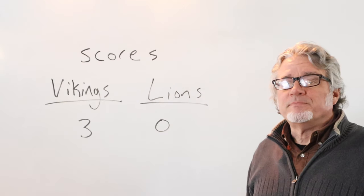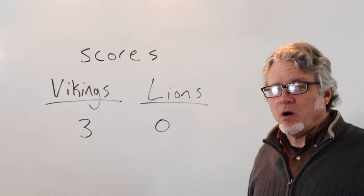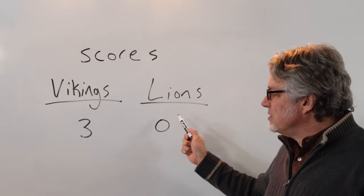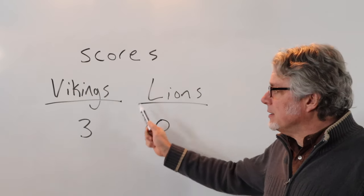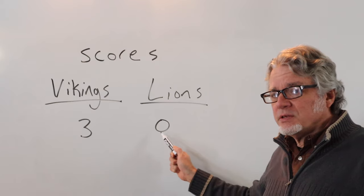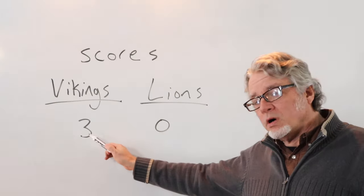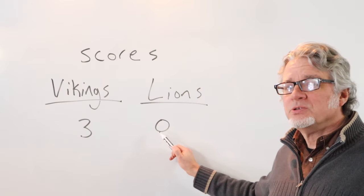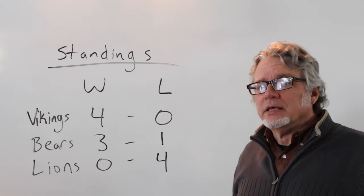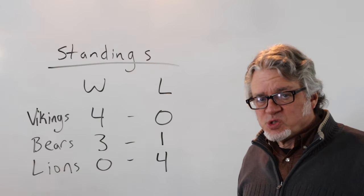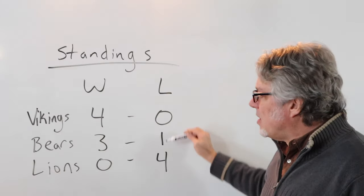When talking about points scored during a game, use zero for no points. This team has three points, this team has zero points. The score is three to zero. When talking about standings in a league, a sports league of some kind, then the wins go first and then the losses.